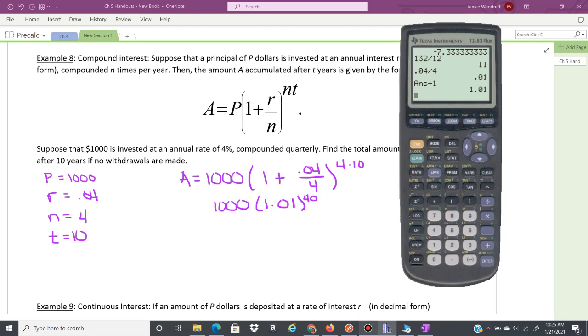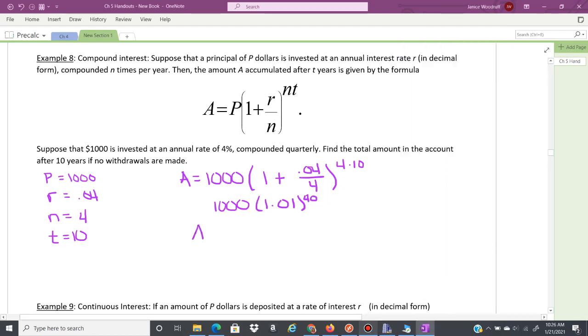So that's going to give me 1,000 times 1.01 to the 4 times 10, 40. The biggest mistake that I see is that students will go left to right here, but remember that exponents come before multiplication in order of operations. So you're going to go here, 1.01, you're going to raise that to the 40th, then you're going to multiply by 1,000. So the multiplication is last here. So that amount is going to be $1,488.86.